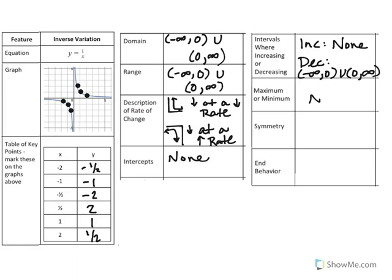So that would be negative infinity to 0 and 0 to infinity. For maximum or minimum, there is none. There is no true symmetry here. You could say that there is possible symmetry at y equals negative x if you were to reflect your graph onto itself. But typically here, we could say none as well.